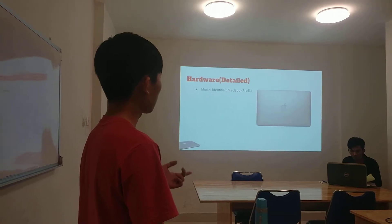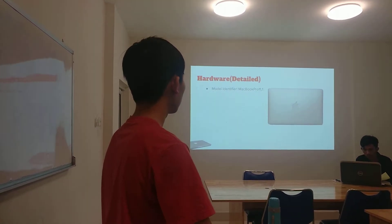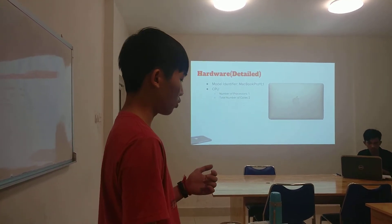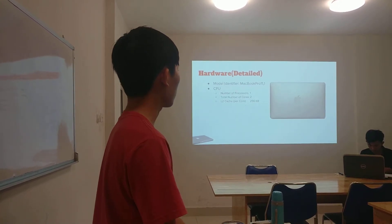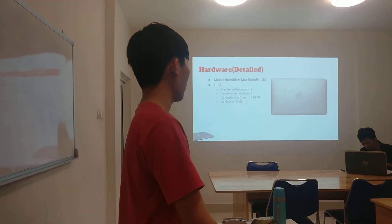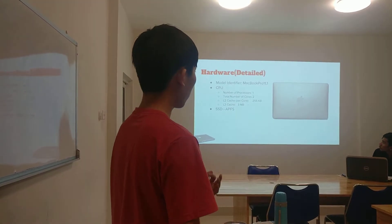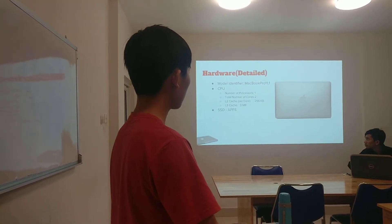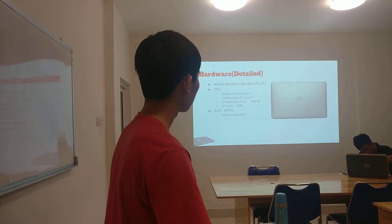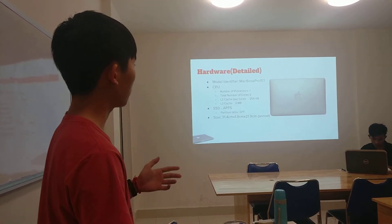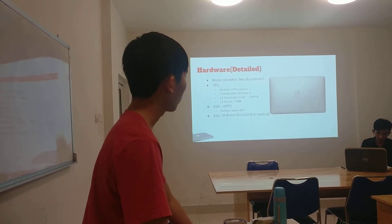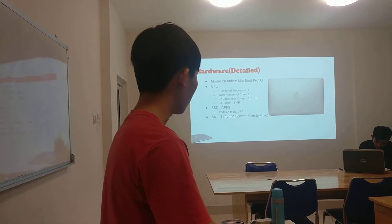The model identifier is MacBook Pro 11,1. The CPU has one CPU with 2 cores — dual core — with an L2 cache of 256 kilobytes and a shared L3 cache of 3 megabytes. The SSD is formatted in APFS, Apple's new format for security, and the partition table is GPT. The size is 31.4 by 1.8 by 21.9 cm — width, height, and depth — as you can see here.